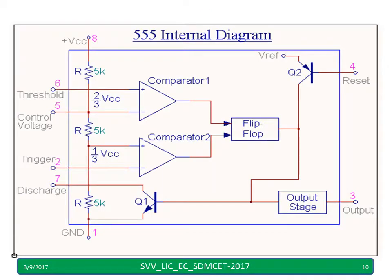This is the internal block diagram of the 555 Timer. The comparator 1 and comparator 2 we just discussed are present here. Remember the two-thirds voltage and one-third voltage reference points. Please try to remember this 555 Timer internal block diagram, as this is what we are going to use for astable mode and monostable mode operation.